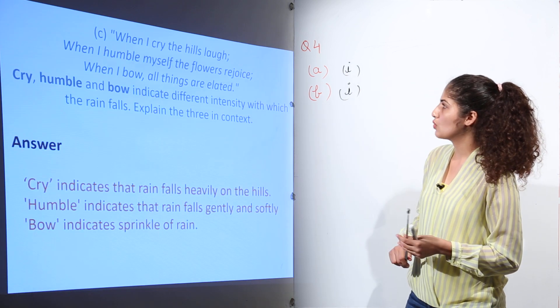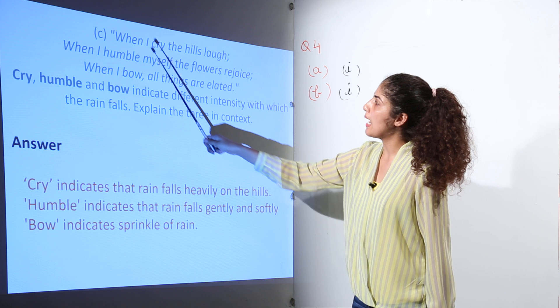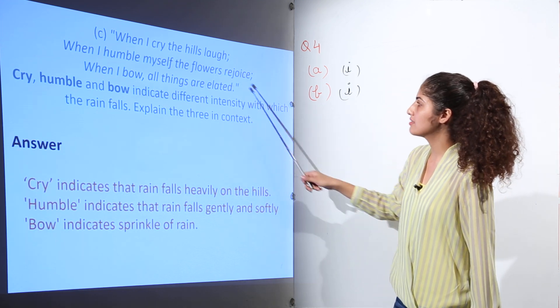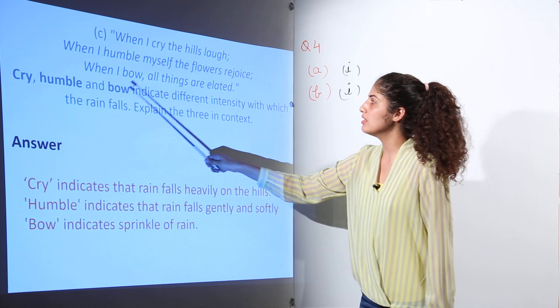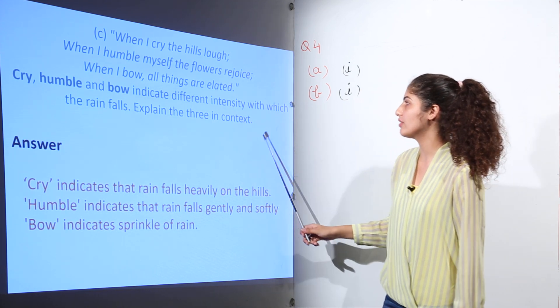Moving on to the next question: When I cry, the hills laugh. When I humble myself, the flowers rejoice. When I bow, all things are elated. Cry, humble, and bow indicate different intensity with which the rain falls. Explain the three. Yes, these are the intensities.